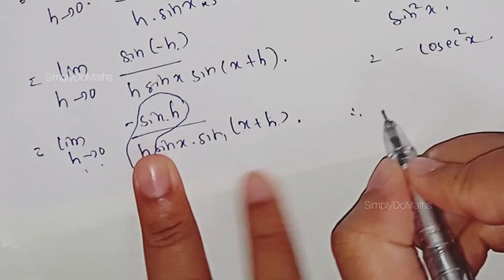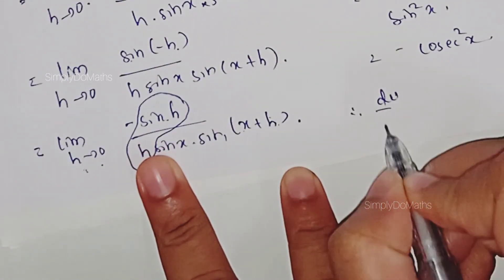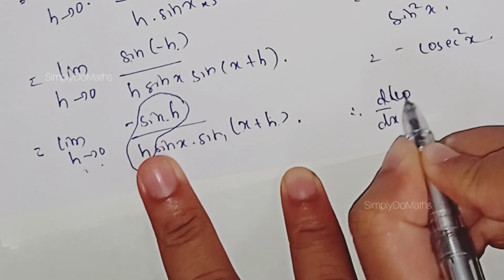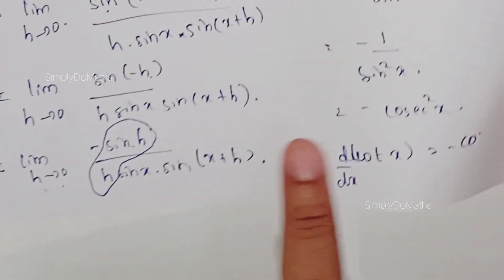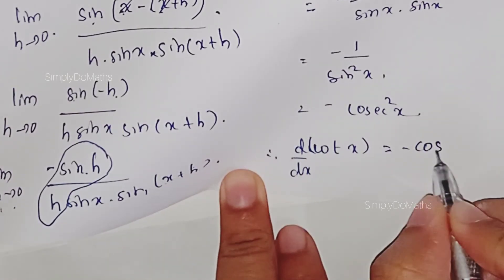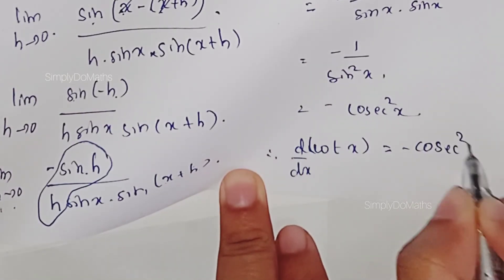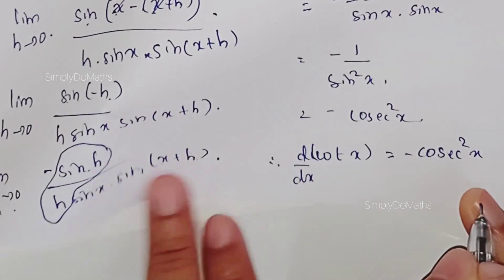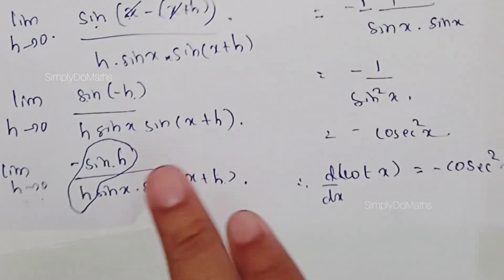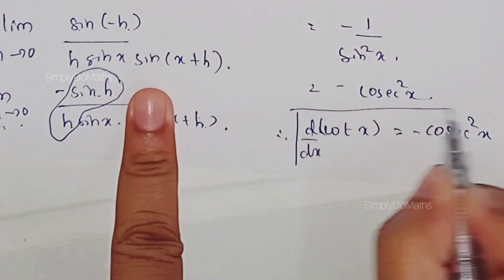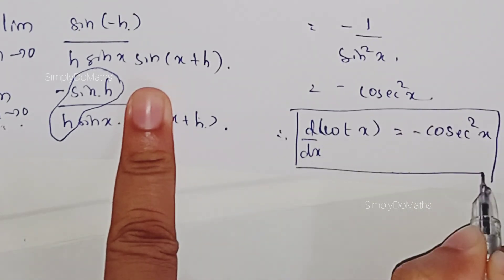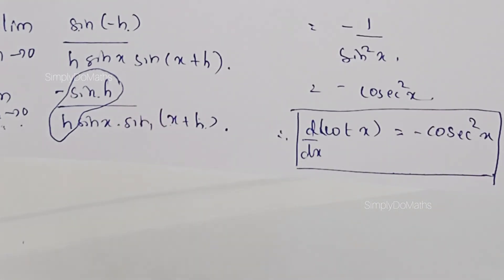Therefore, d/dx of cot(x) is equal to −cosec²(x). This is a very important result. Let us continue with one more example in the next class.